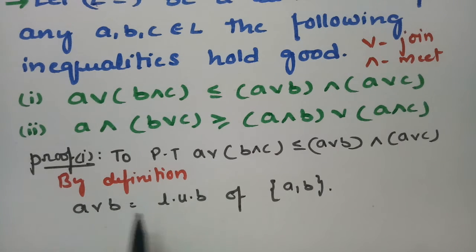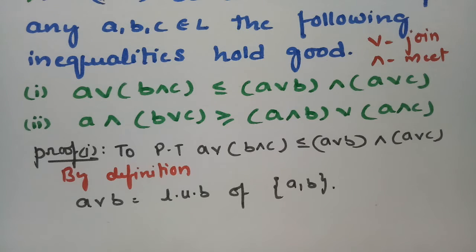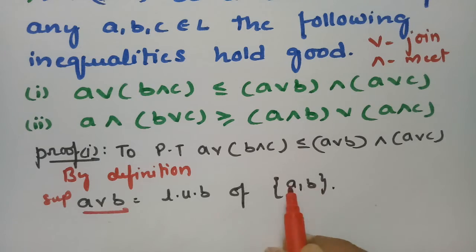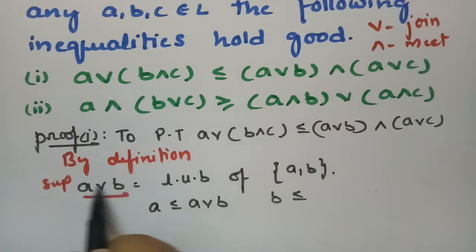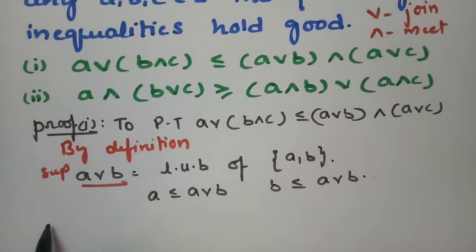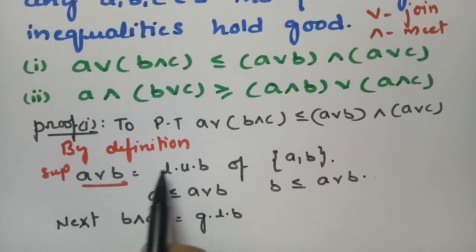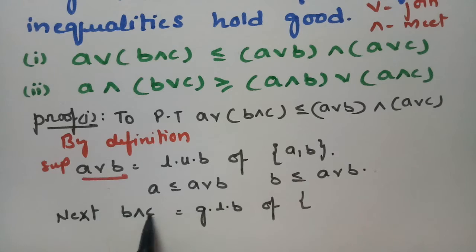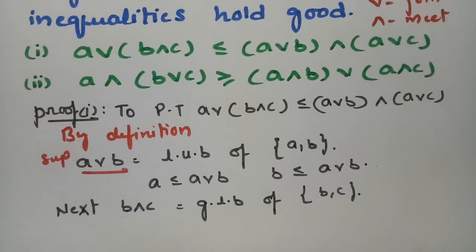By definition, a ∨ b equals the least upper bound of the set {a, b} — this is the supremum for {a, b}. Similarly, b ∧ c is the greatest lower bound of the set {b, c}, which acts as the infimum. So b ∧ c ≤ b and b ∧ c ≤ c by the definition of infimum.